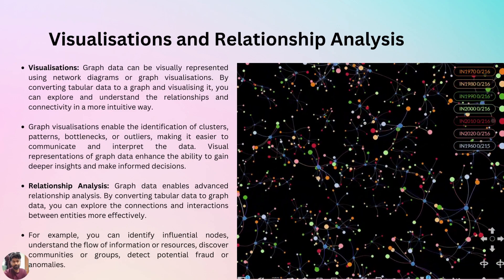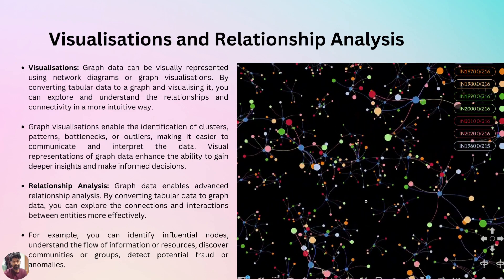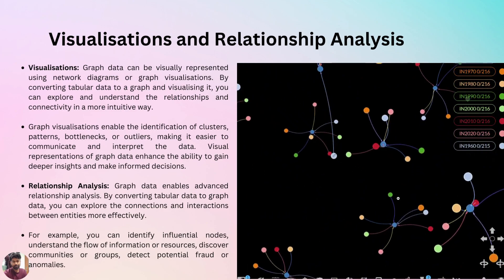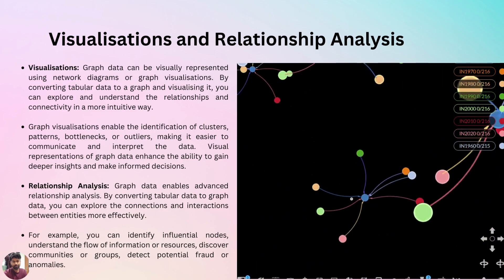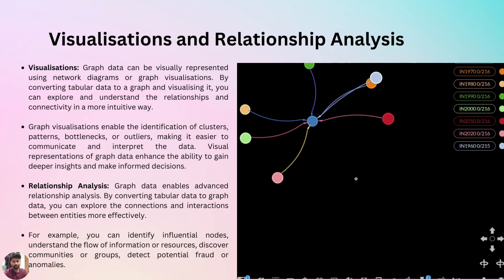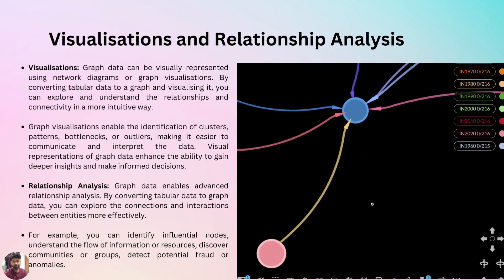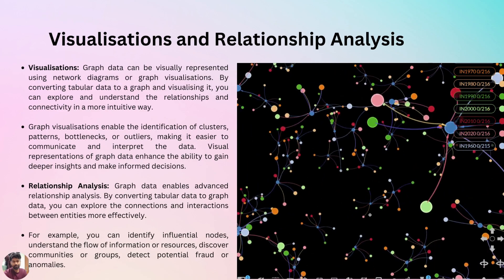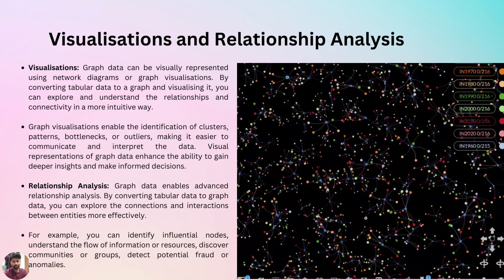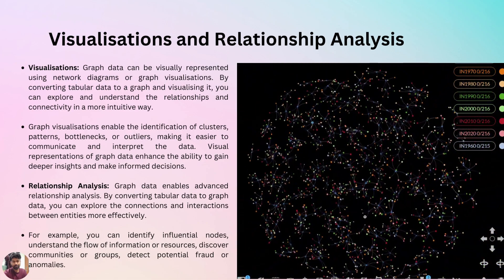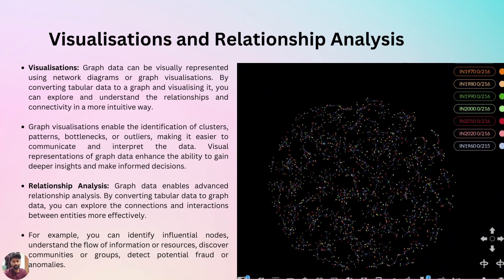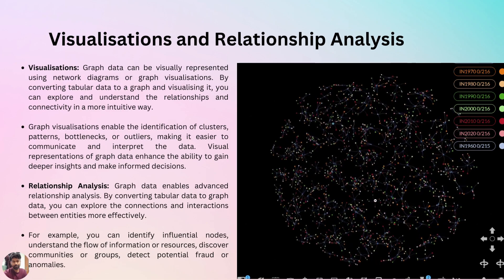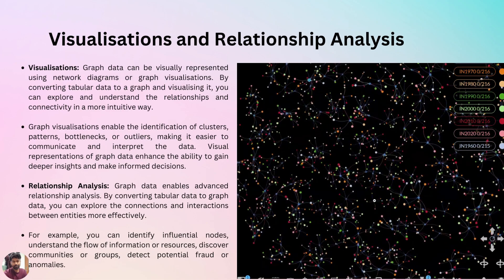Graph data enables advanced relationship analysis. By converting tabular data to graph data, you can explore the connections and interactions between entities more effectively. For example, with population graph data, you can identify influential nodes, understand the flow of information or resources, discover communities or groups, and detect potential fraud or anomalies.